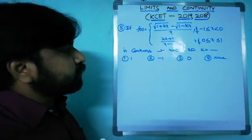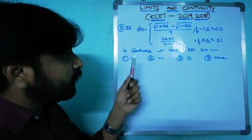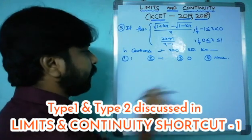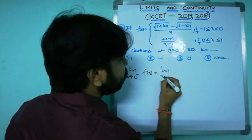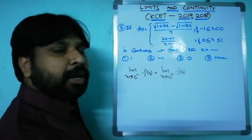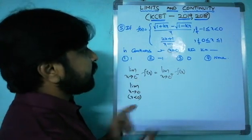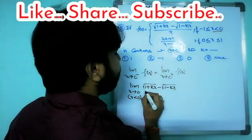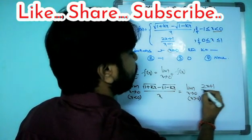2018 Q3: f(x) = (√(1+kx) - √(1-kx))/x for -1 ≤ x < 0, and (2x+1)/(x-1) for 0 ≤ x ≤ 1. If continuous at x = 0, find k. This is Type 1: find left limit (x→0⁻) and right limit (x→0⁺) and set them equal. Left limit uses the first piece; right limit: substituting x = 0 gives (0+1)/(0-1) = -1.